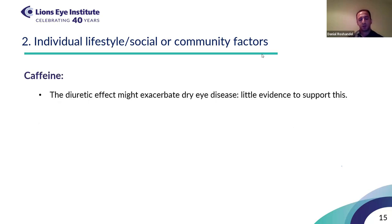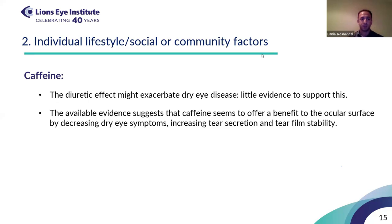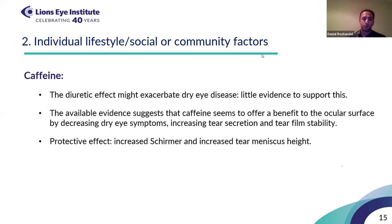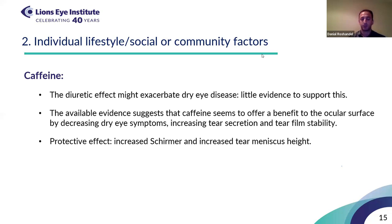Regarding caffeine, although it has a mild diuretic effect that might exacerbate dry eye disease, there is little evidence to support this hypothesis. In fact, available evidence shows that caffeine might have a beneficial impact on the ocular surface by decreasing dry eye symptoms and increasing tear secretion and tear film stability, suggesting a protective effect. The effect of green tea was equivocal — it was neither harmful nor beneficial in studied populations.